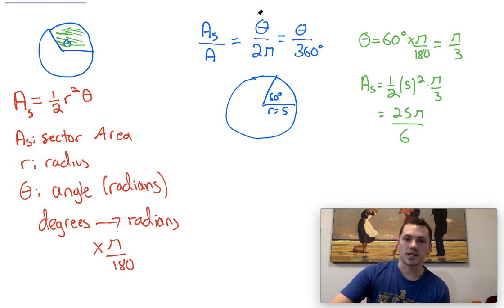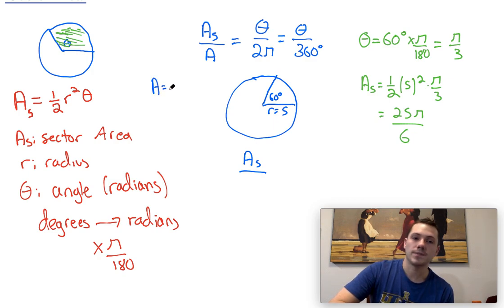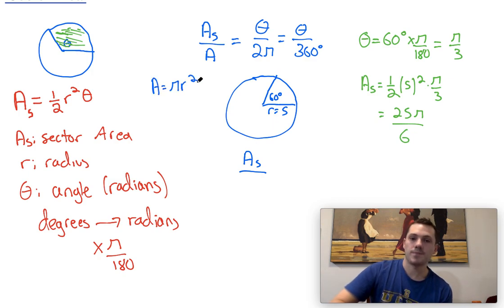Or we could just use this formula up here. Because it's originally given in degrees, I'm going to do the area of the sector, divide it by the area of the whole circle. And if we remember, the equation for area of a circle is pi r squared. Since the radius is 5, r squared would be 25, and pi r squared would be 25 pi.